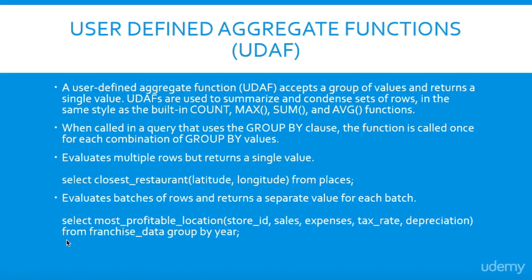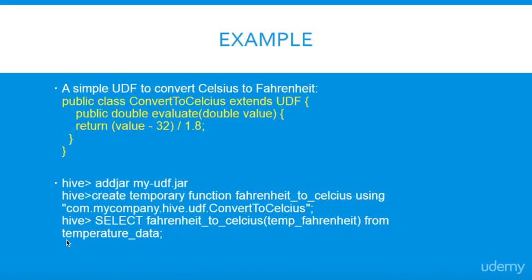It evaluates batches of rows and returns a separate value for each batch. You can see in the example here — first of all, we are creating a UDF to convert Celsius into Fahrenheit, adding the UDF jar into Hive, then we are creating a named function so that we can call it in a query.